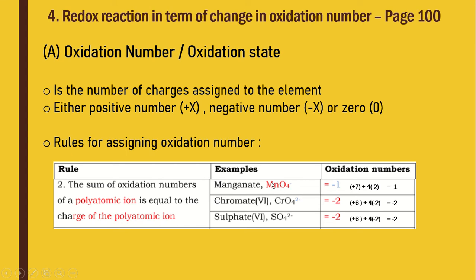For manganate ion MnO₄⁻, the manganese oxidation number is +7. We write: X + 4×(−2) = −1, where −1 is the charge of the polyatomic ion. Solving: X − 8 = −1, so X = +7. For chromate ion CrO₄²⁻, the charge is −2, so the oxidation number sum equals −2.